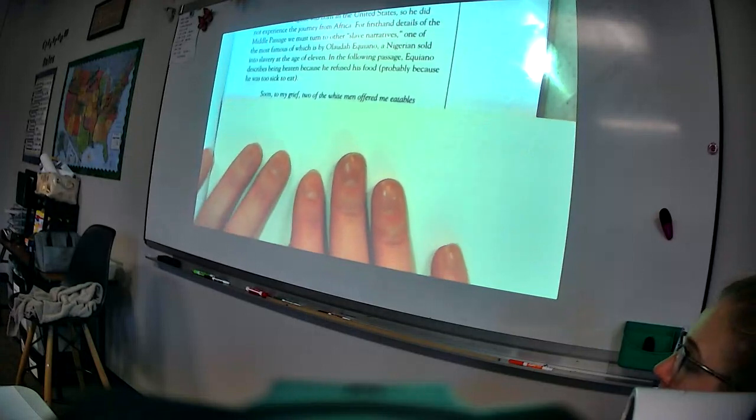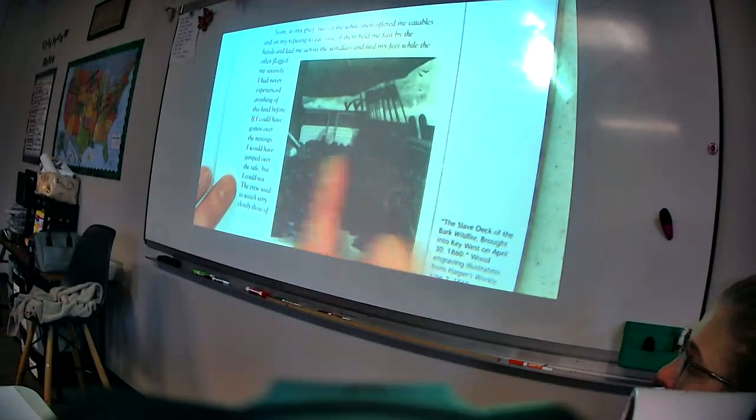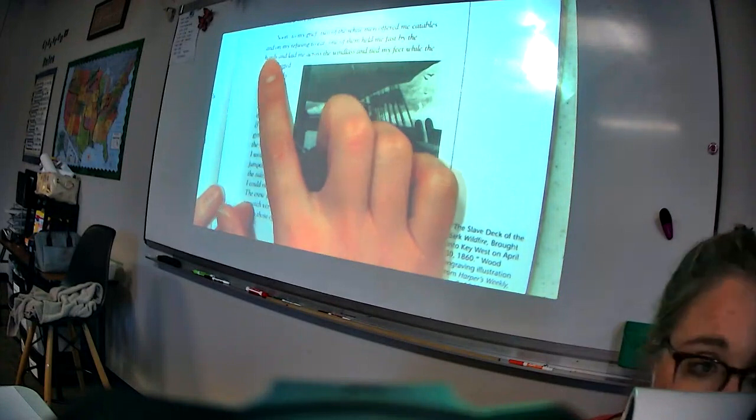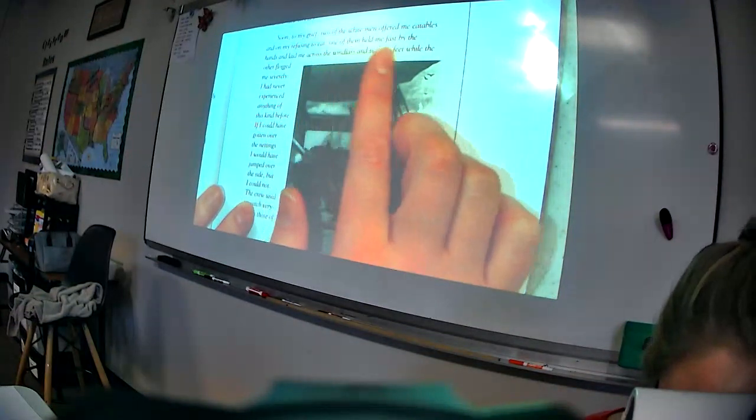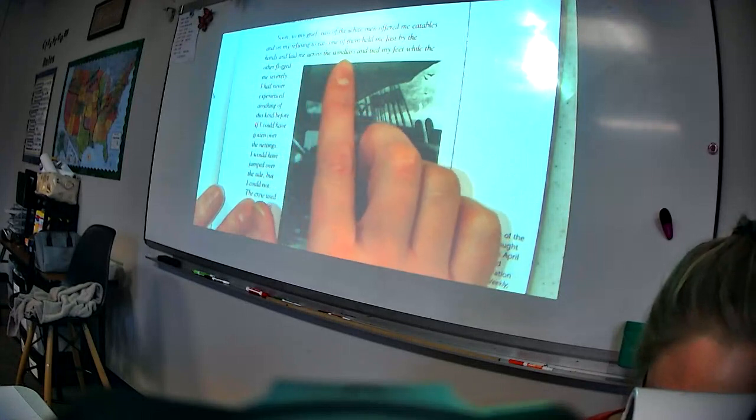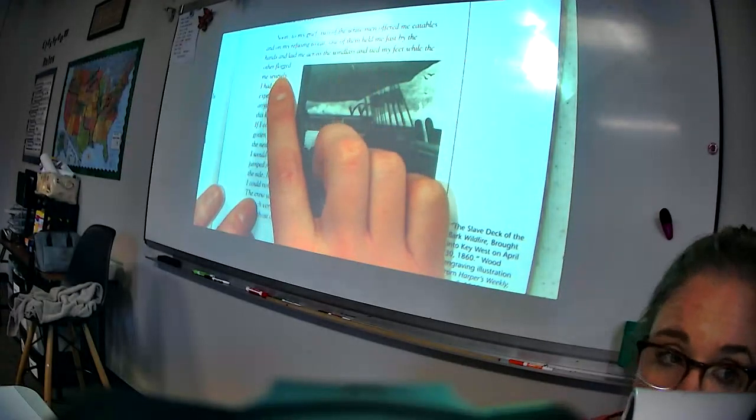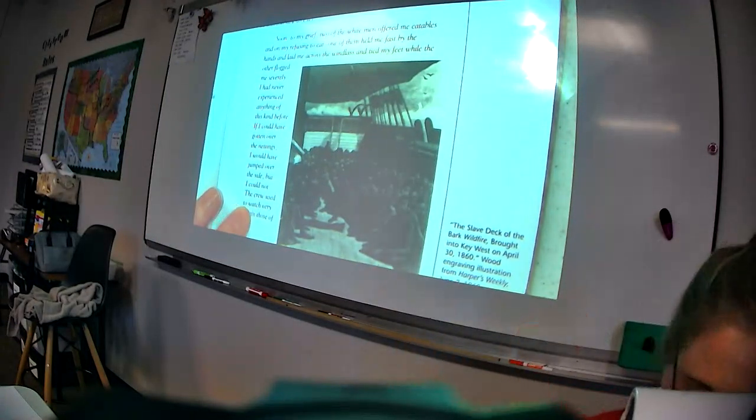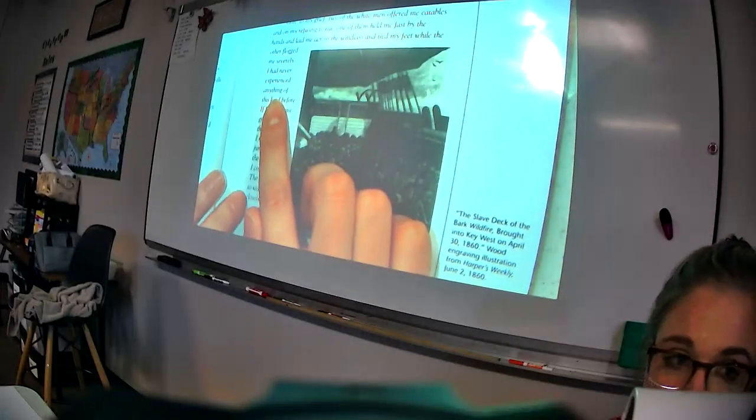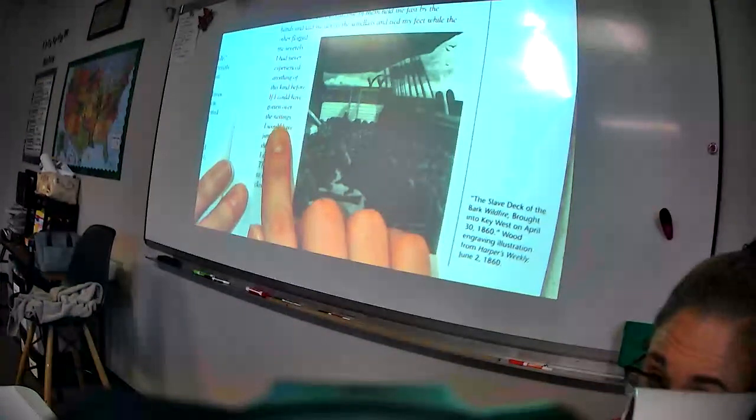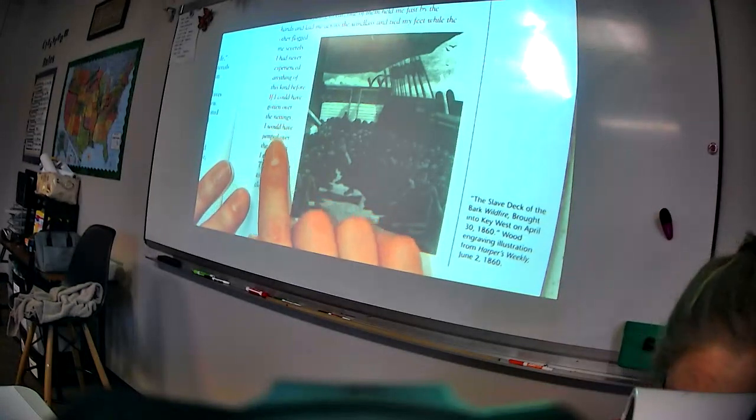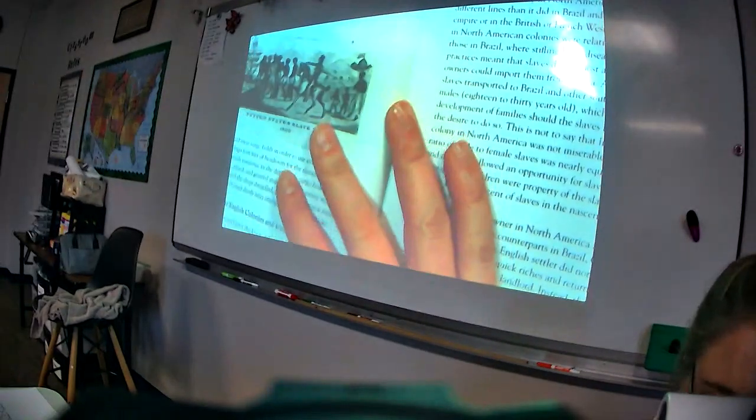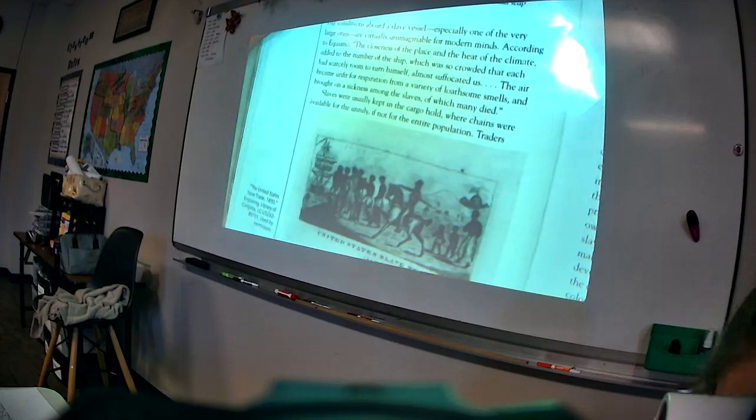Frederick Douglass was born in the U.S., so he did not experience the journey from Africa. For first-hand details of the Middle Passage, we must turn to other slave narratives, one of the most famous of which is by Olaudah Equiano, a Nigerian sold into slavery at the age of 11. In the following passage, Equiano describes being beaten because he refused his food, probably because he was too sick to eat. So, any sort of thing where the slave did not do what the captain of the ship told him to, he was beaten for. So, in this instance, the guy was probably too sick to eat. He may have been nauseous. He may have had a cold. He may have had the flu, whatever it may be. And he was beaten for it. Because any sign of the slave saying no to the captain had to be whipped right away. Otherwise, the rest of the slaves thought they could also come against the captain.